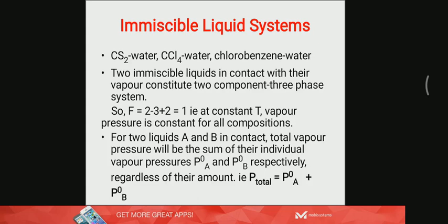So two immiscible liquids in contact with their vapor constitute a two-component, three-phase system. Applying the phase rule here, we get F = 2 − 3 + 2 = 1. That is, at constant temperature, vapor pressure is constant for all compositions. That means if you fix the temperature and mix the two liquids in any proportion, the vapor pressure will be the same.